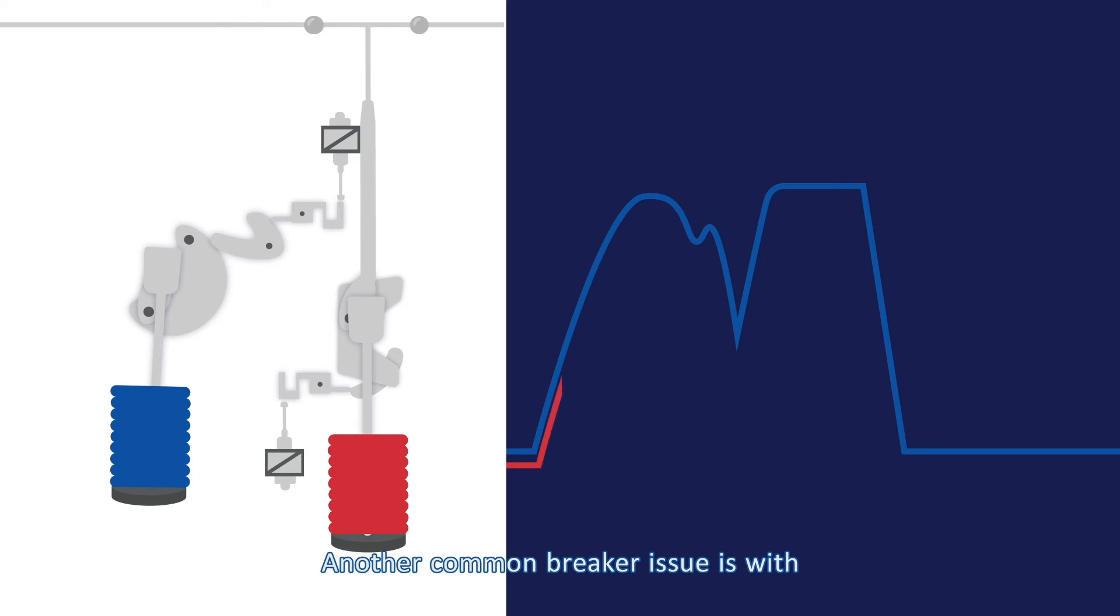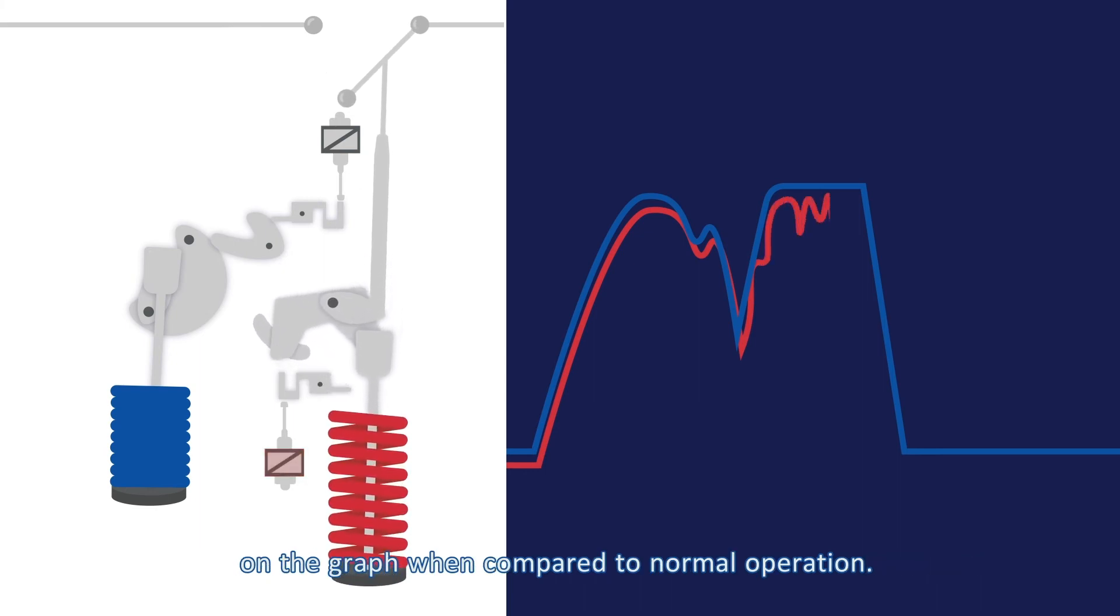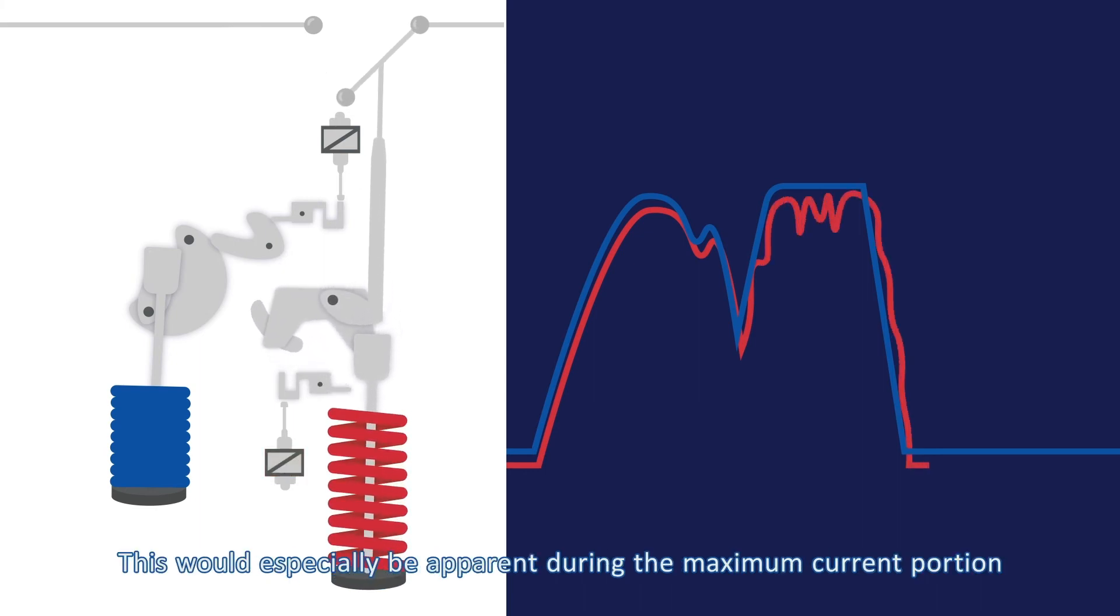Another common breaker issue is with wiring connections or contacts within the trip circuit. It would be visible in the waveform capture as an erratic current signal on the graph when compared to normal operation. This would especially be apparent during the maximum current portion of the signature and at the falling current edge as the 52A switch opens.